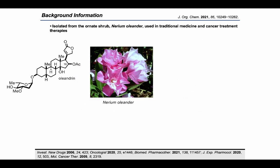Among the various cardiotonic steroids, oleandrin has received significant attention due to its rich biological profile. Oleandrin is isolated from the ornate shrub nerium oleander, which is used in traditional medicine to treat a variety of conditions.